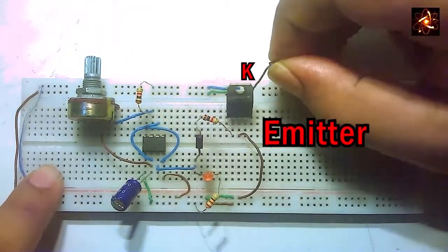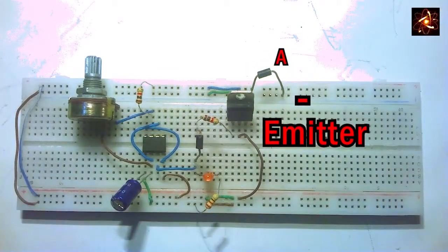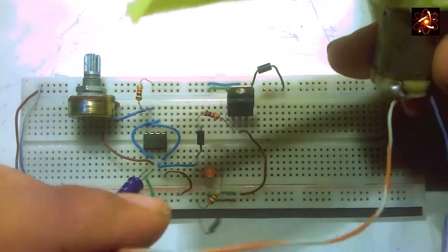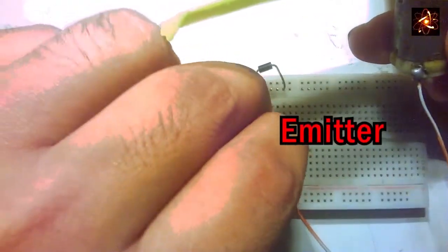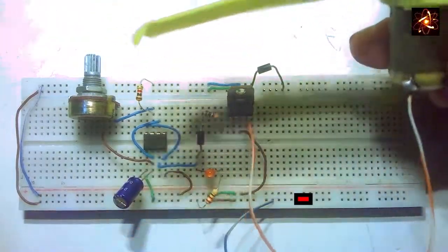In the emitter pin we add a diode cathode terminal, with the anode terminal in the negative rail. Now connect one of the motor pins in the emitter and another motor pin in the negative rail of the breadboard.